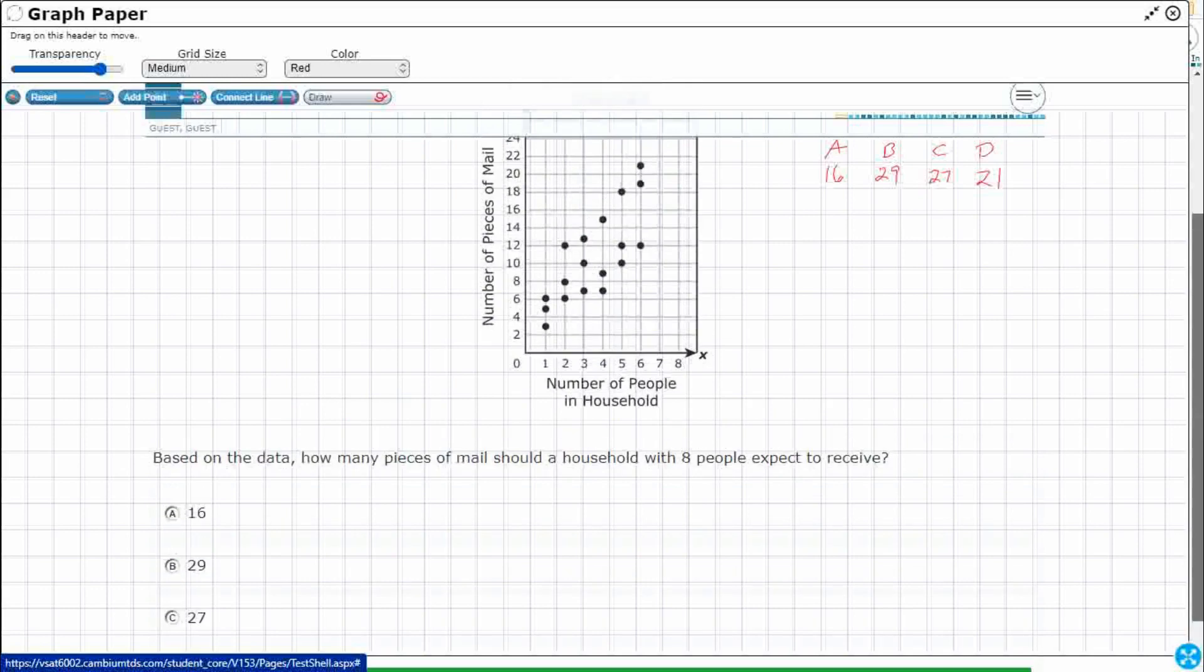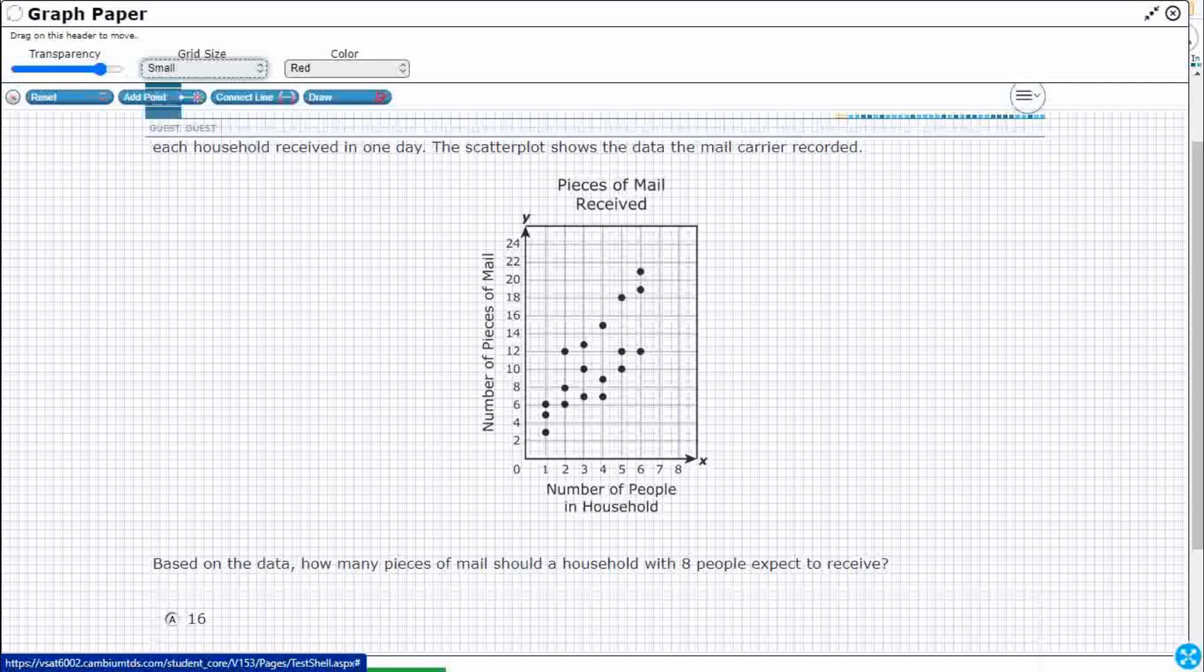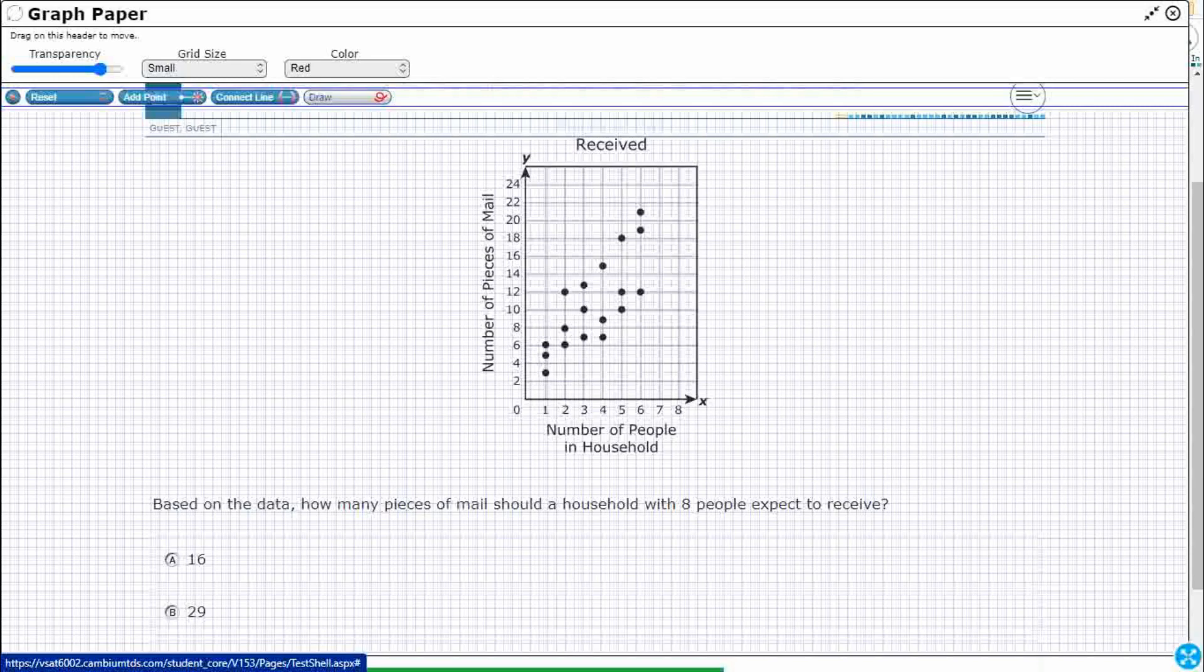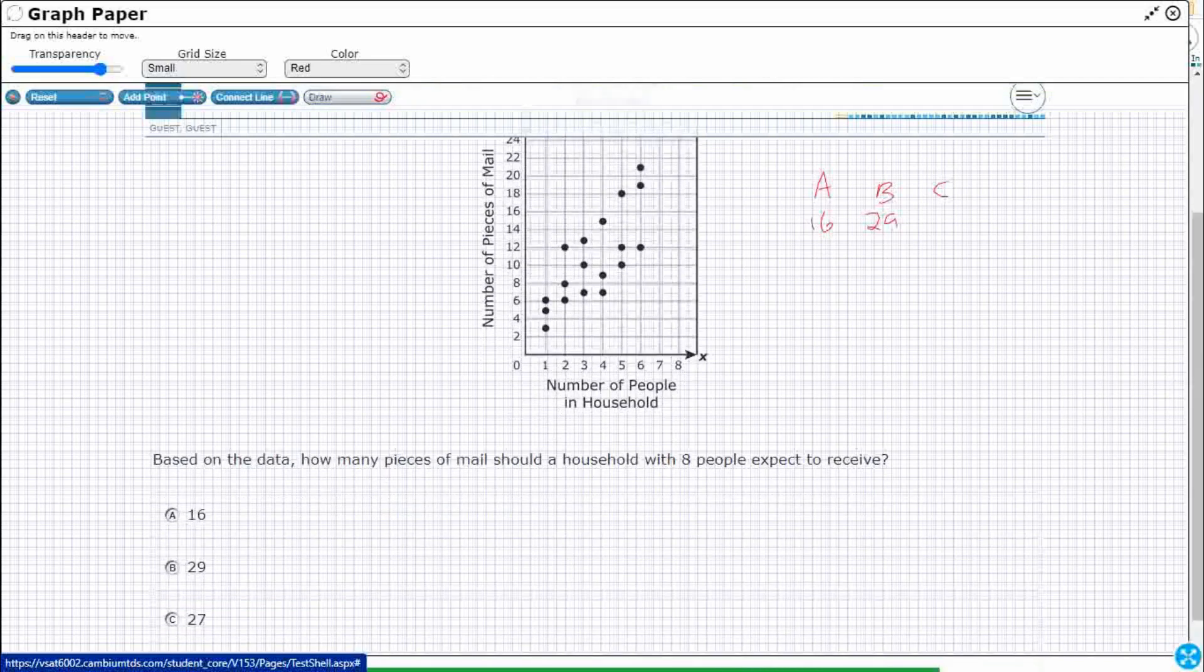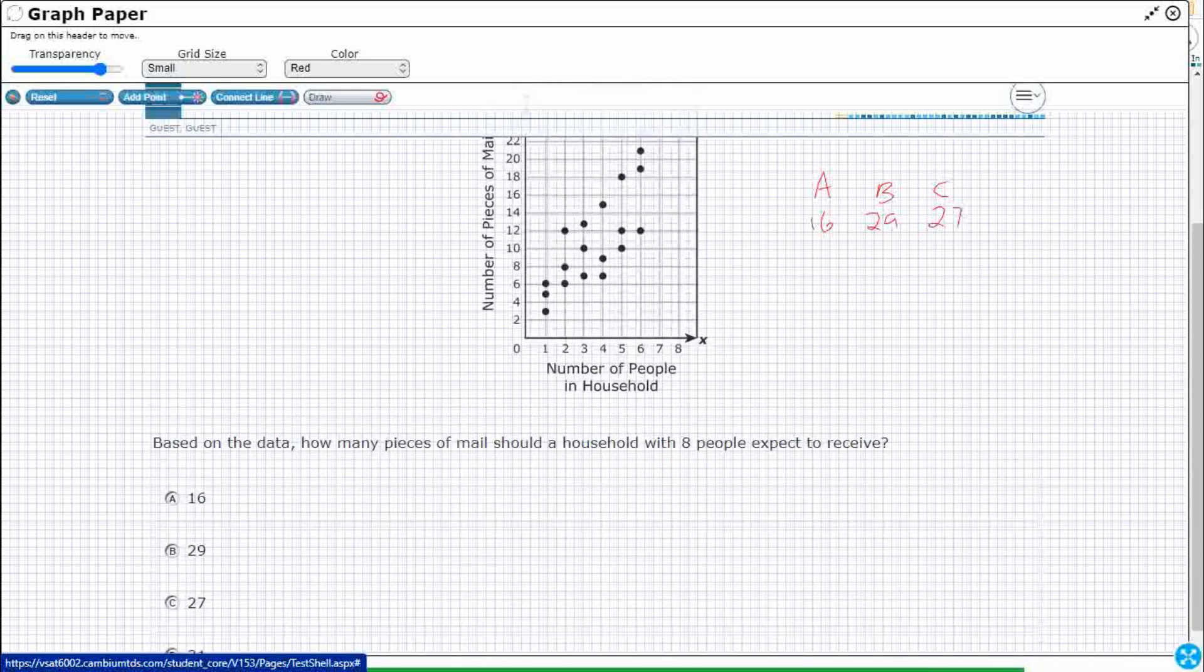What I could do now is draw on my scatter plot there. I'm going to actually change my grid size here, so that's going to lose that, but that's fine. I'll just do that again. The reason I did that was the lines were not necessarily matching up, but I am going to want to use the connect line feature, but that's going to be difficult if the squares are too big.